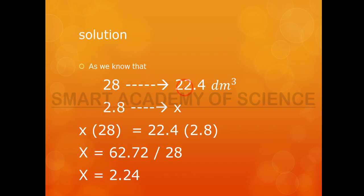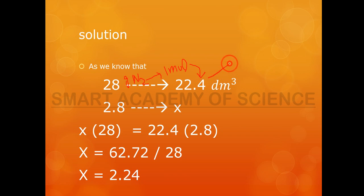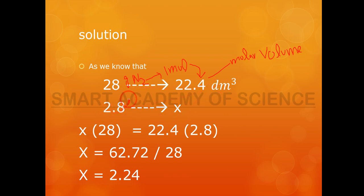Solution: as we know, 28 grams of nitrogen is equal to 1 mol. So 28 grams of N2 gives a volume of 22.4 dm³. But we have 2.8 grams — the volume is x, which we need to find. We cross multiply to solve for x.